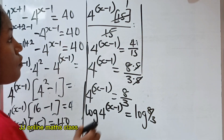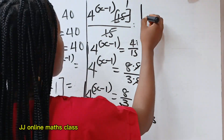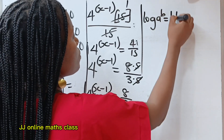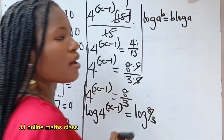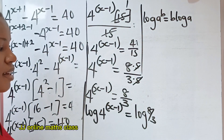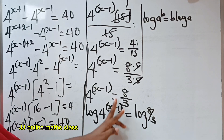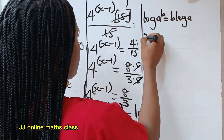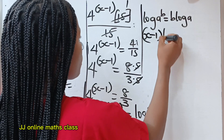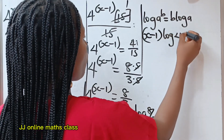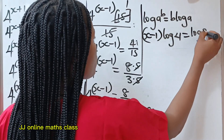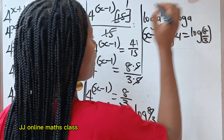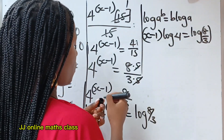Remember that when you have log a raised to the power of b, this is equal to b multiplied by log a. So that means we can bring the exponent (x minus 1) down to multiply log 4. We have x minus 1 multiplied by log 4 is equal to log(8/3).